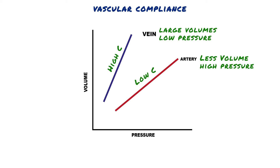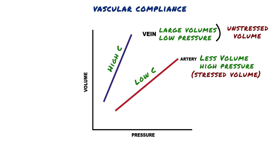The difference in compliance between veins and arteries underlies the concepts of unstressed volume and stressed volume. The veins are most compliant and contain the unstressed volume — a large volume under low pressure. The arteries are much less compliant and contain the stressed volume — a low volume under high pressure. The total volume of blood in the cardiovascular system is the sum of the unstressed volume, the stressed volume, and whatever volume is contained in the heart.